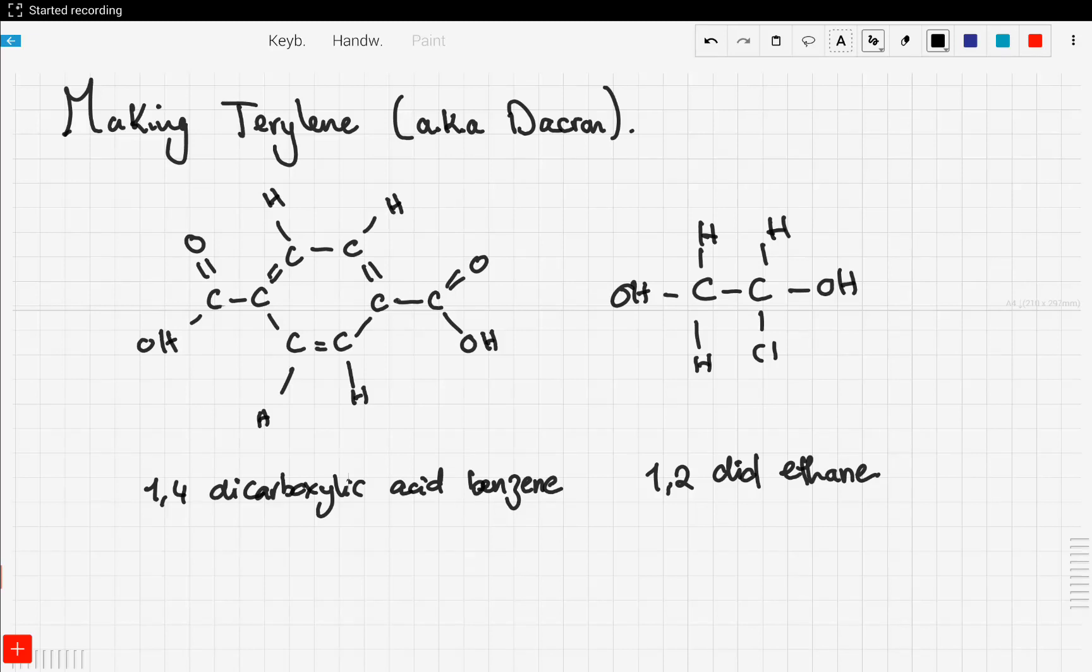So now let's talk about a new compound that's formed using condensation polymerization, and this compound is Dacron. Dacron is mostly found in your shirts, in your bed linen, and it's very common to find it in clothing and stuff like that. So Dacron is also known as Terylene, and let's see how Dacron is formed.